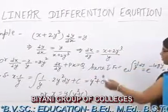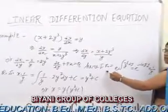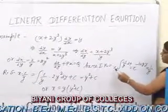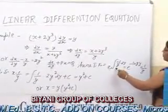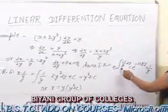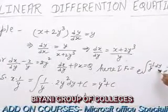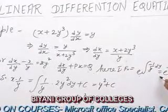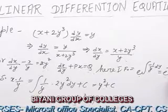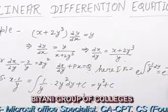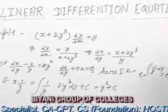Here, the integrating factor is defined by the expansion of the integral of minus 1 upon y dy, which equals the expansion of minus log y, which equals 1 upon y.